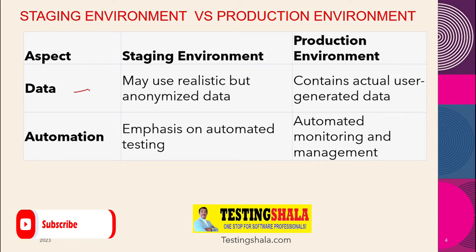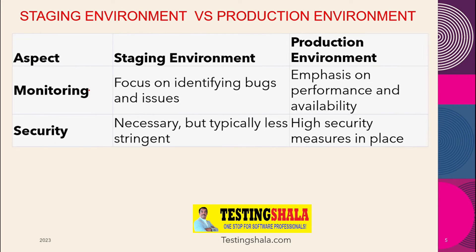The next key difference is the automation perspective. In the staging environment, we emphasize automation testing. But in production, we concentrate more on monitoring and management of the production environment in an automated way.